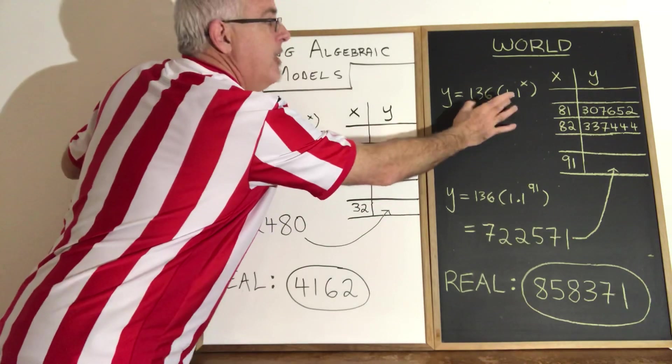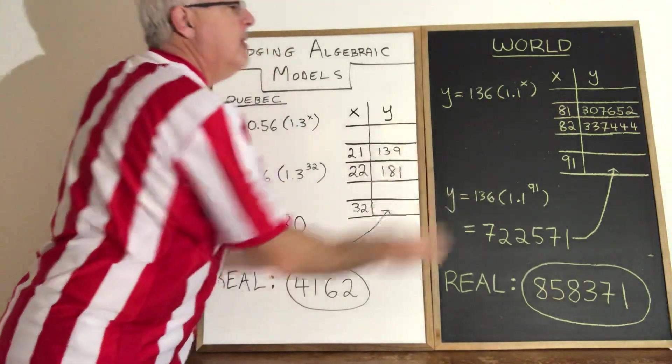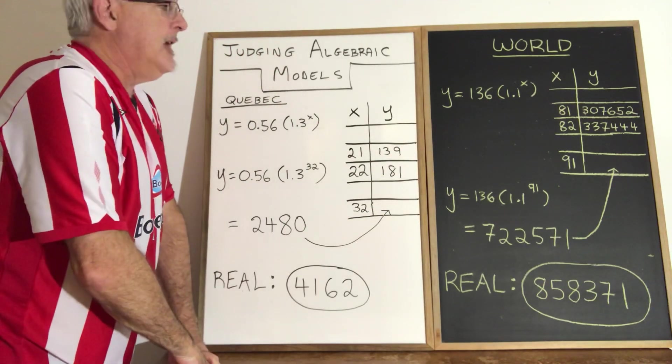We did the same process to find an exponential equation and this time we got y equals 136 times 1.1 to the x.